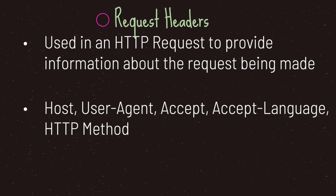An example of an HTTP request header using host and user agent is when you want to download a specific application for a specific computer. If you go to Google Chrome's main web page and click the download button, you can download it for Linux, Macintosh, or Windows. When you send that information to the server — your computer type — the server responds back with a download link for your specific computer. You can also send information like accept and accept-language if you want to access different languages on the server, along with the HTTP method you are using.